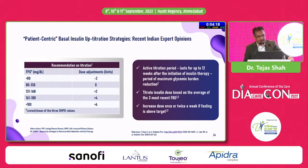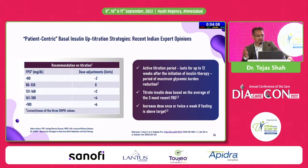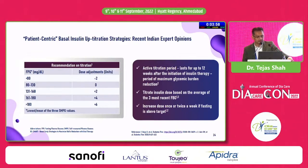There is an Indian consensus on a simplified titration approach based on fasting blood sugar level. Give patients a target fasting blood sugar between 80 to 130 mg/dL. Anything above 130 to 160 warrants a 2-unit dose increment, and anything below 80 warrants a minus 2-unit reduction. Titrate insulin based on the average of the three most recent readings and increase the dose once or twice a week if fasting is above target.